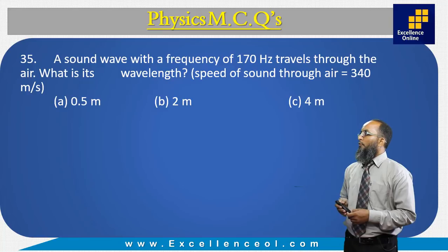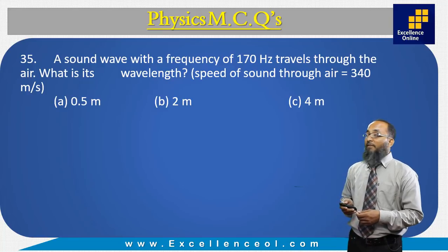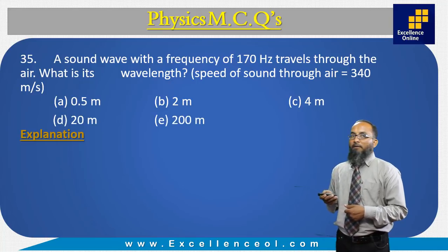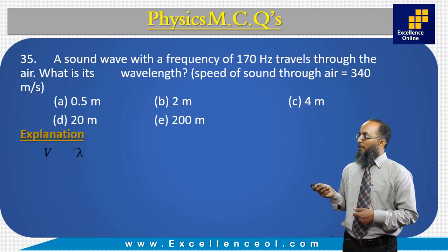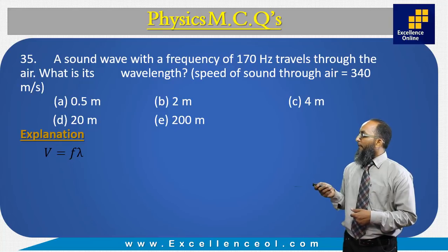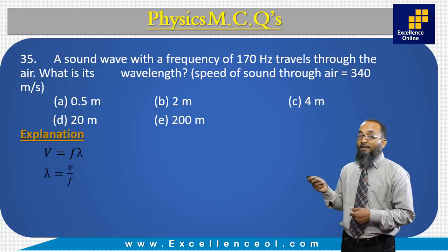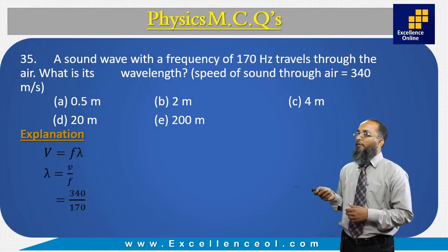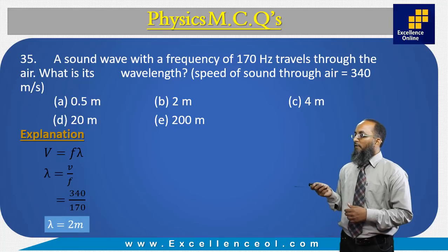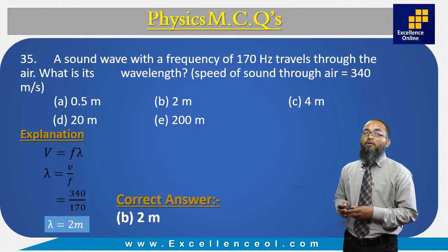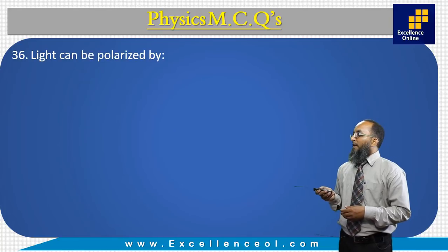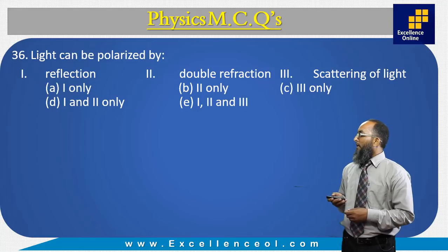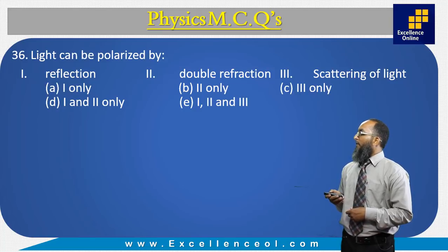A sound wave with a frequency of 170 Hz travels through air. What is its wavelength? The speed of sound is 340 m/s. Using v = fλ, rearranging gives λ = v/f = 340/170 = 2 meters. The correct answer is B: 2 meters.